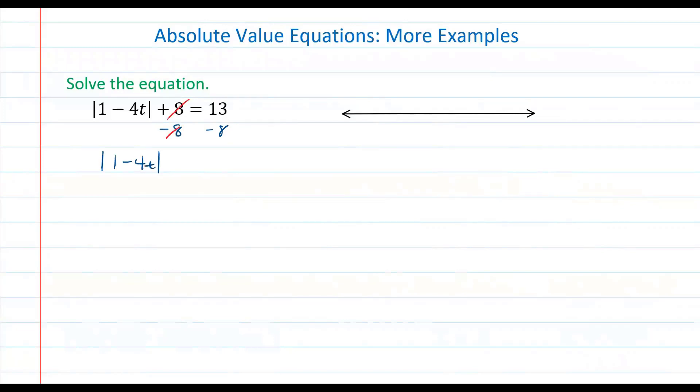That way we have isolated the absolute value. So we have the absolute value of 1 minus 4t is equal to positive 5. Now what we have is the absolute value of an algebraic expression equal to a value.